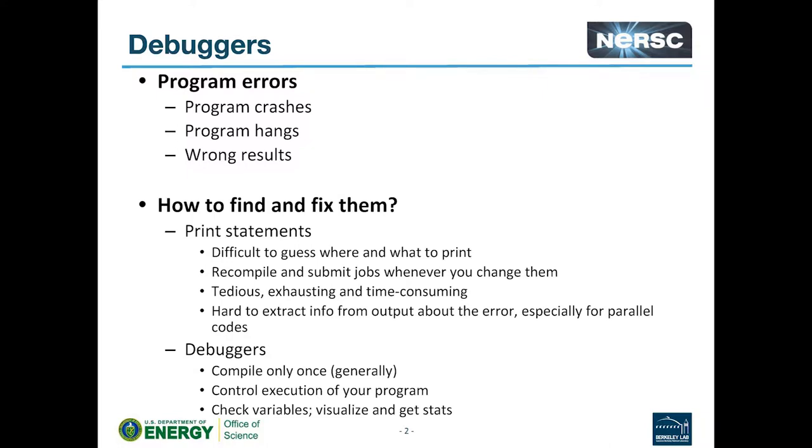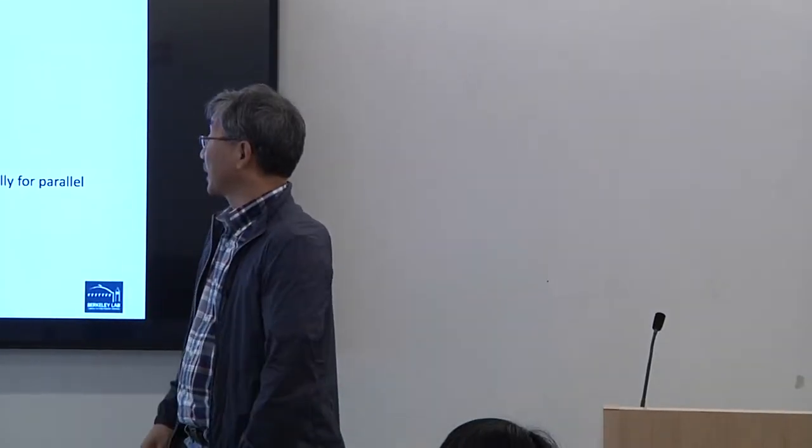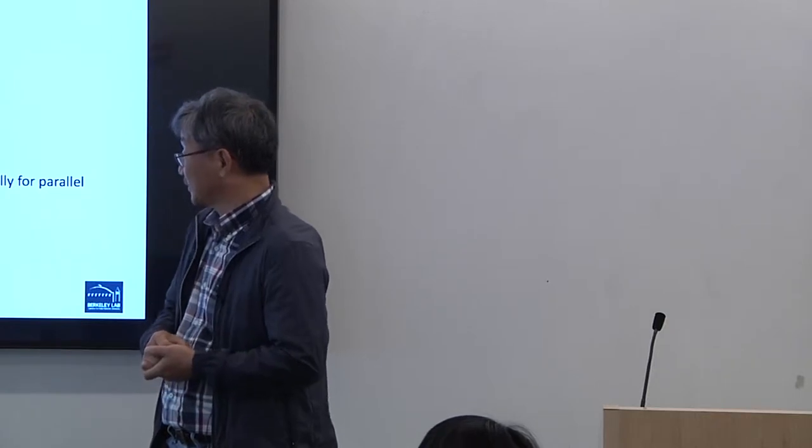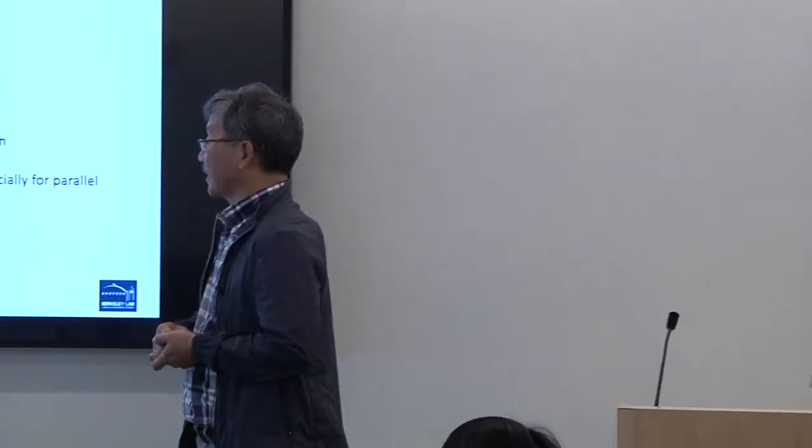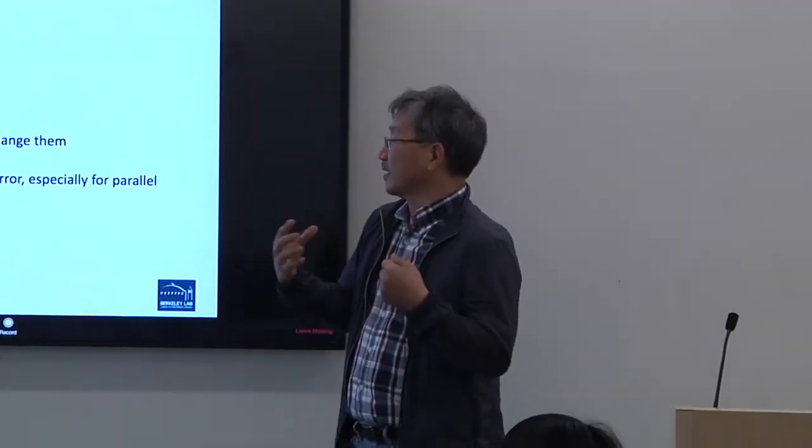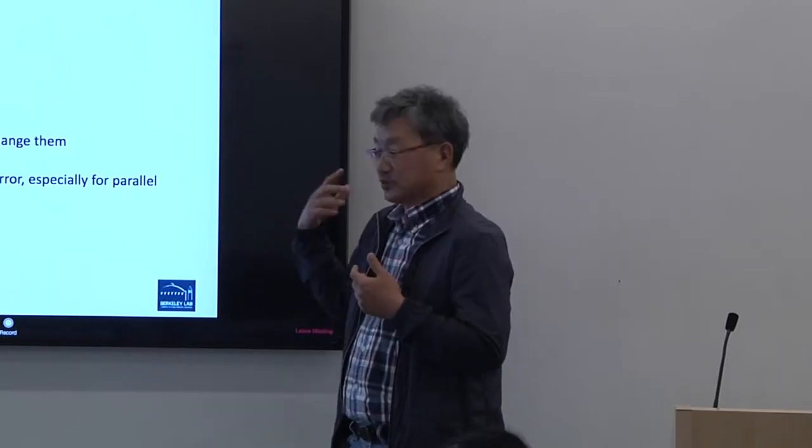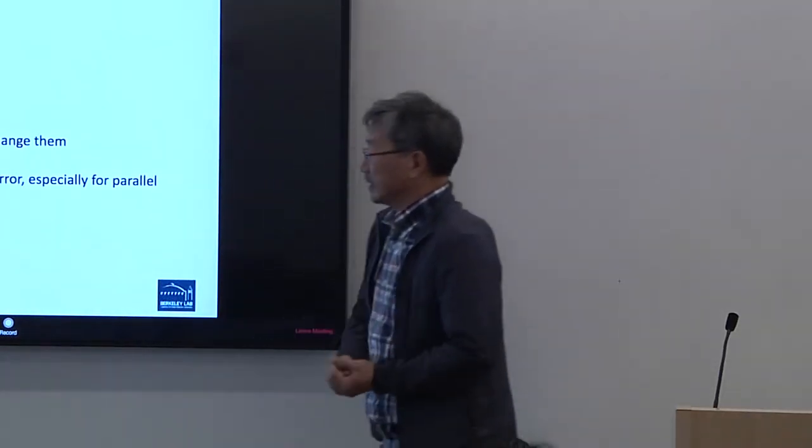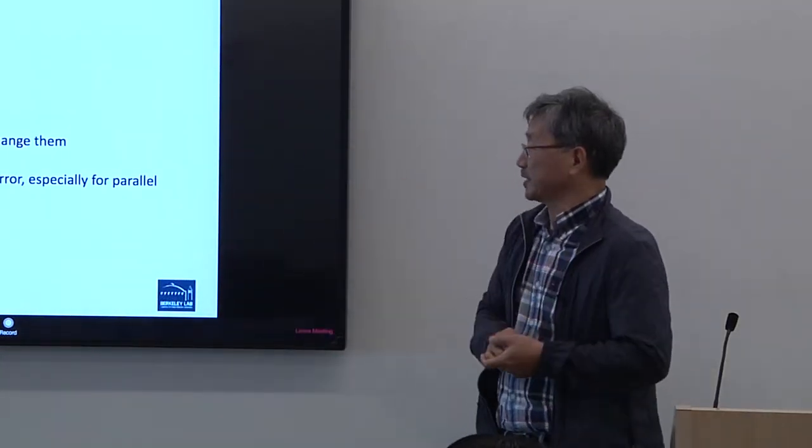So if you guess it is incorrect about the location or the variable to print, then you have to move the print statement somewhere else. That means that you have to recompile and submit the job again, and you have to do this kind of loop over and over again. So this is very tedious, exhausting, and very time-consuming. And also from this output, it's very difficult to extract information about the error that is stored here.